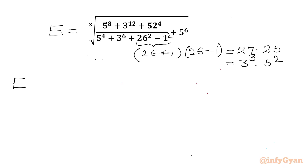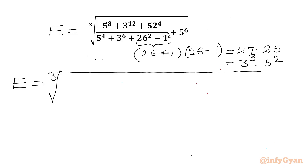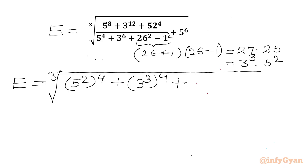We will write our expression E. We have 5 to the power 8, which we can write as (5 squared) to the power 4, plus 3 to the power 12, which we write as (3 cubed) to the power 4, plus 52 — which I can write as 25 plus 27 — whole to the power 4.